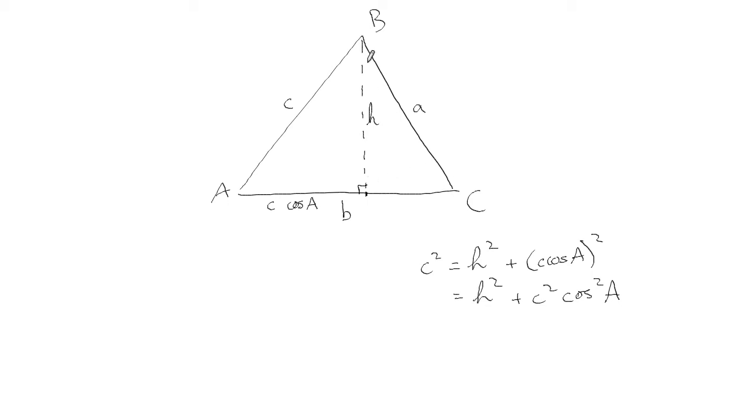Okay, now we could look at this triangle. So this distance there, because the total distance all that way is b and that bit's c cos A, this bit will be b minus c cos A.